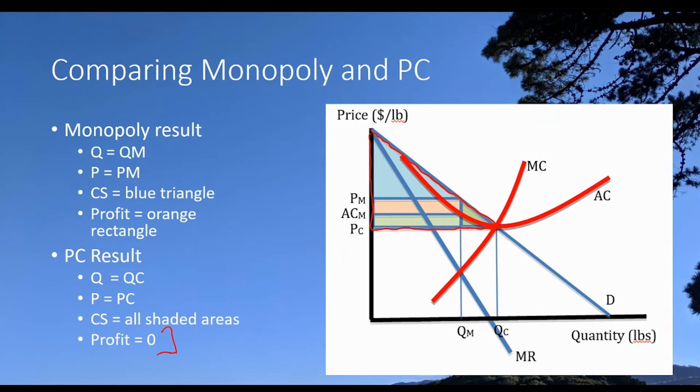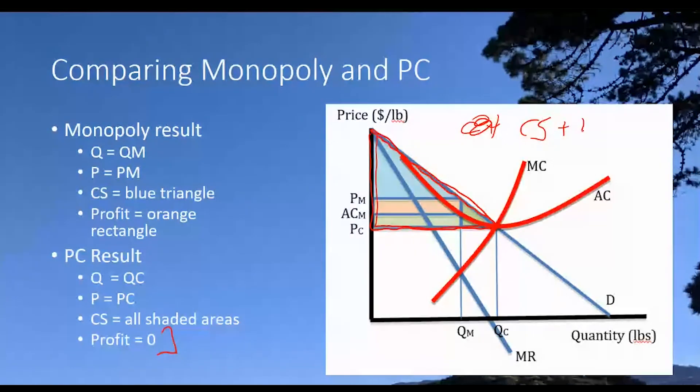Profits are zero. So the firms are not making any surplus. All of the surplus is accruing to consumers in the marketplace here. The firms are going to be just willing to produce that particular amount, but again, surplus accrues entirely to the consumers. Now what about overall welfare? Well, overall welfare under perfect competition is going to be given by just the consumer surplus plus profits, but profits are zero. So it's just consumer surplus. All of the benefits are accruing to consumers.